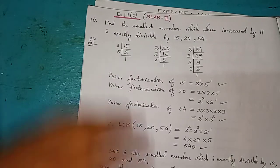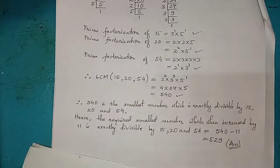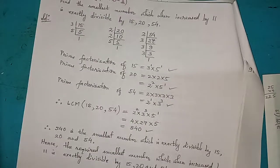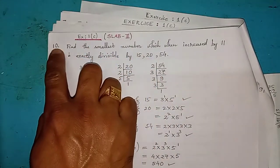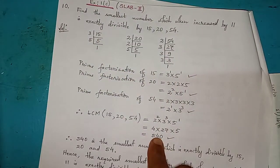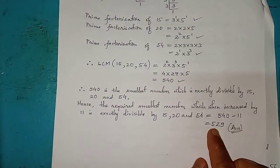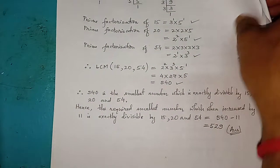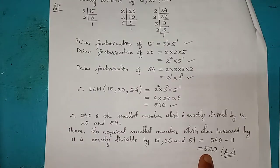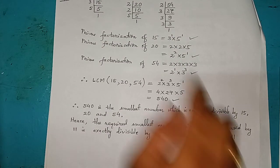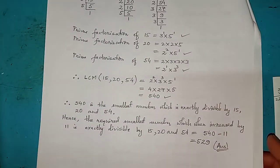I hope you all understood. To summarize the question pattern: we first find the LCM of the three given numbers, then subtract 11 from that LCM to get the required smallest number. This is the required smallest number which, when increased by 11, is exactly divisible by 15, 20, and 54. Thank you.